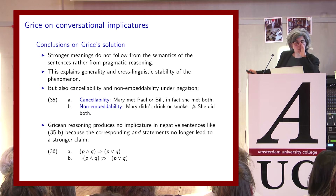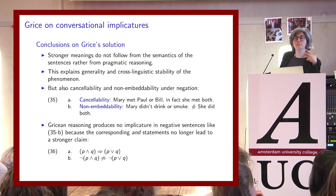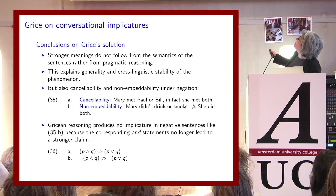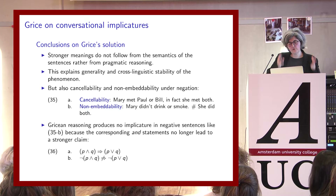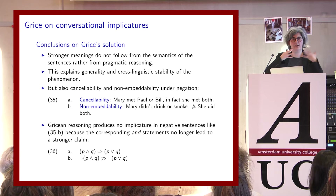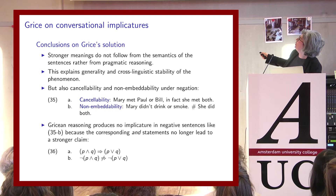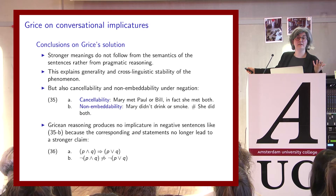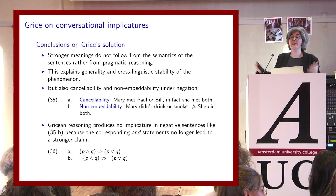The Grice solution allows us to explain the data: in particular, the cancelability and non-embeddability of these inferences under negation. In 'Mary didn't drink or smoke', we don't get any additional implicature. We predict the meaning we want just by assuming inclusive disjunction in the scope of negation. Nothing extra arises because, in the scope of negation, a conjunction is weaker than a disjunction — the reverse of the positive case — which blocks the Gricean derivation. This is brilliant.